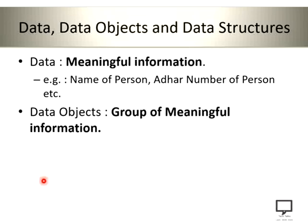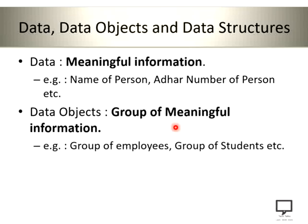Let's move forward to the next concept, which is data objects. What are data objects? Data objects are nothing but a group of meaningful information. An example is a group of employees or a group of students, because an employee has a number of meaningful information fields associated with them. A single employee or a single student can also be considered a data object.